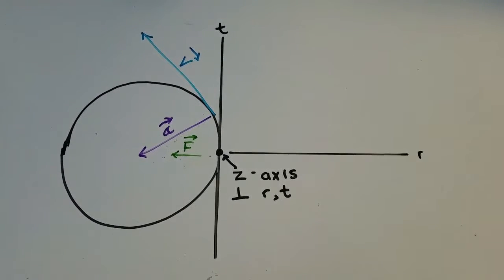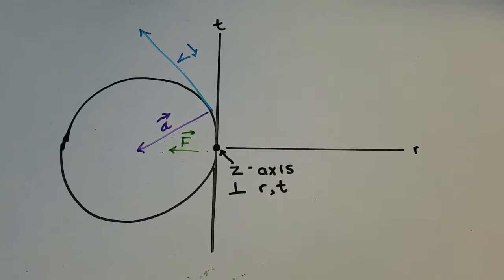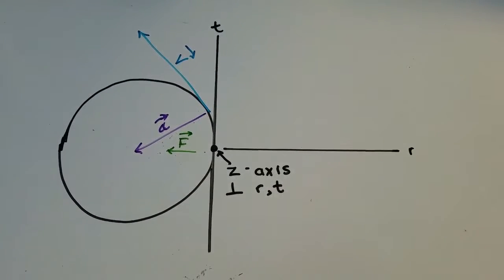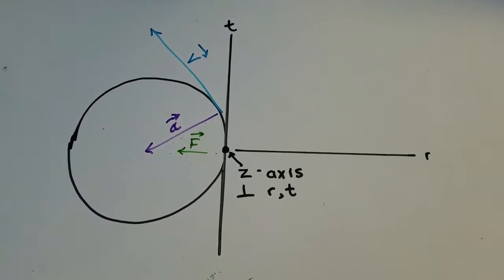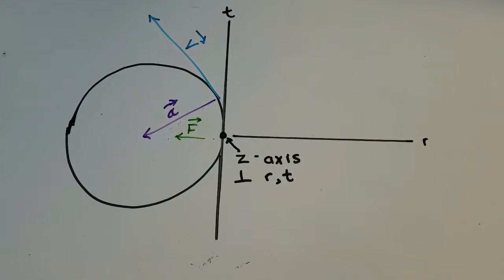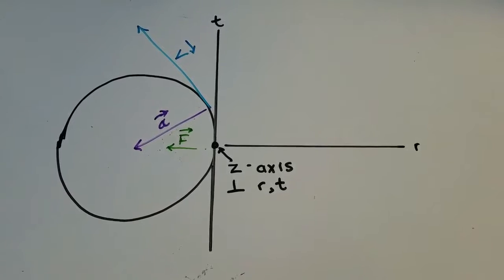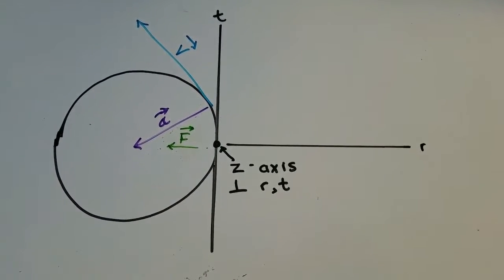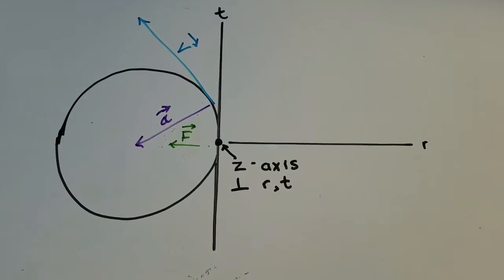The centripetal force will also point inwards radially on the circle. I've drawn what's called an R-T-Z axis, which is essentially a three-dimensional axis that will allow us to visualize this better. The Z axis is parallel to both the R and T components, and in this diagram it will be running into and out of the board.